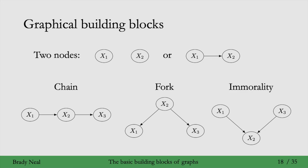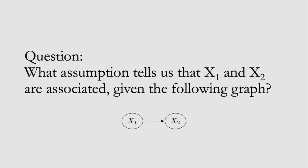Okay, so with these three different building blocks, we can talk about general paths and graphs, and whether association or information flows along those paths or doesn't flow along those paths. But before we get to that, I have another question for you, and it's, what assumption tells us that x1 and x2 are associated in the following graph?